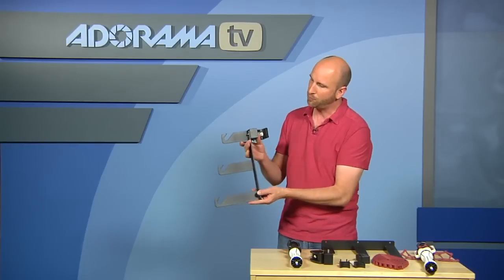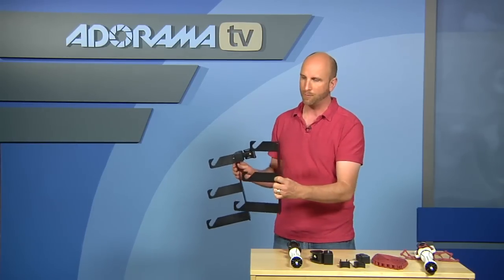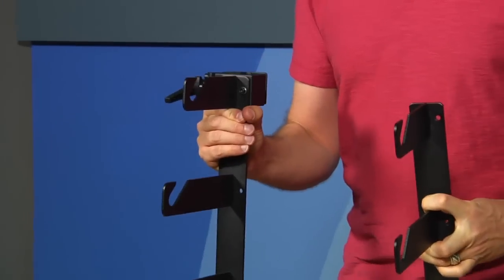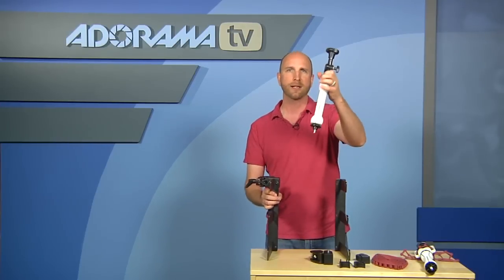Now how this works is you get two brackets like this. So I have one that I've built out and one that's as it comes in the box. And these guys mount to those poles and then they allow you to mount these guys right here.